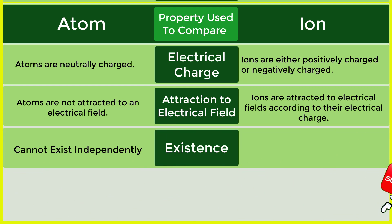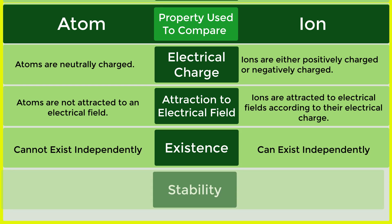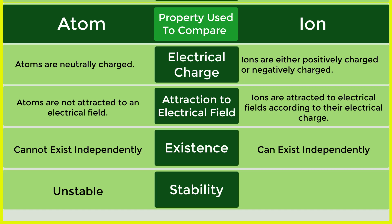Existence: Atom - cannot exist independently. Existence: Ion - can exist independently. Stability: Atom - unstable. Stability: Ion - stable.